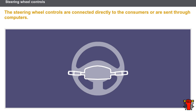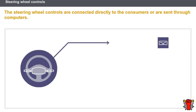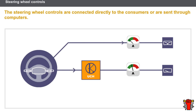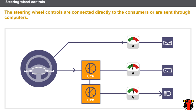The steering wheel controls are connected to the consumers in three ways. For low current consumers, the steering wheel controls are connected directly to the consumers. For medium current consumers, the steering wheel controls are connected to the UCH. For high current consumers, the steering wheel controls use the UCH but require a UPC capable of managing this type of current.